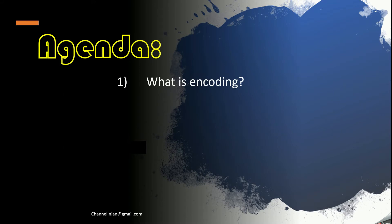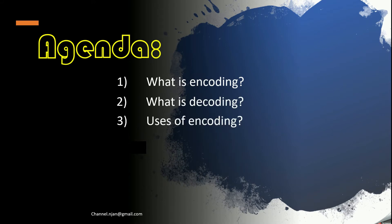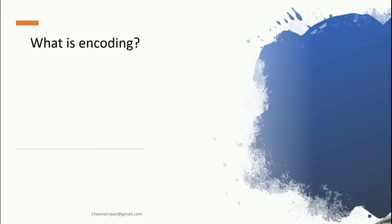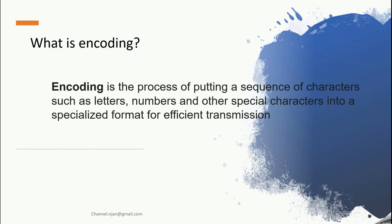This is our agenda for the tutorial: what is encoding, what is decoding, uses of encoding, and types of encoding. First we will discuss what encoding is. Encoding is the process of putting a sequence of characters — such as letters, numbers, or other special characters — into a specialized format for efficient transmission. Based on our upcoming example you will get a clear idea on this.